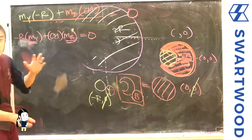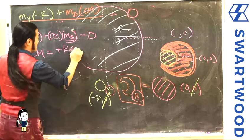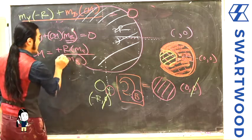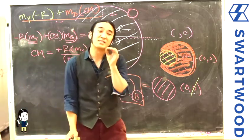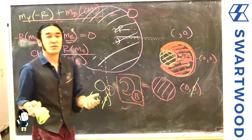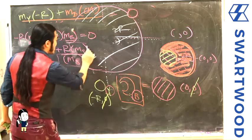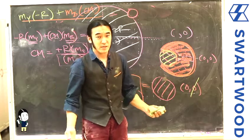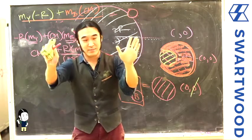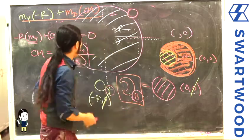Now let's solve it. The center of mass of the brown crescent equals r times m_yellow divided by m_brown. The beautiful part is that since it's uniform density, for the same area you get the same mass. So all we really have to do is compare the areas — the relationship between masses is the same as the relationship between areas.